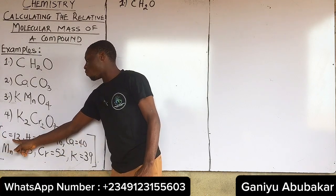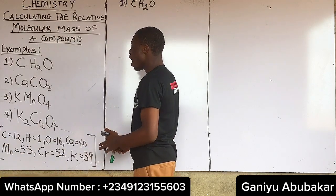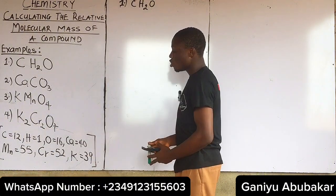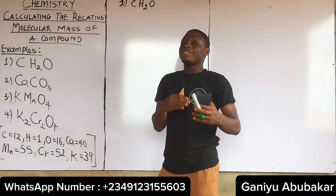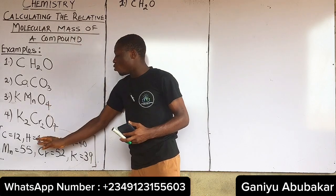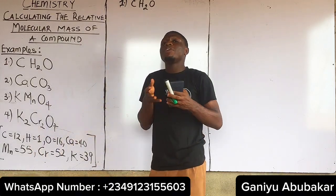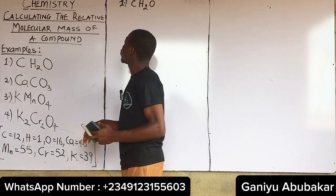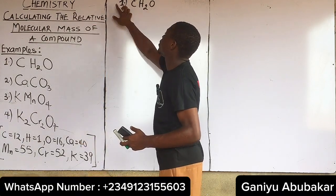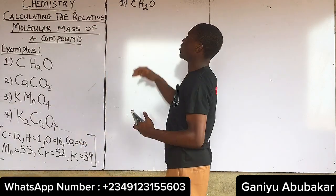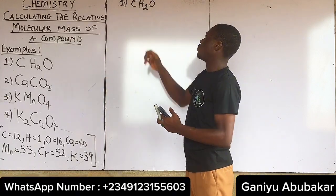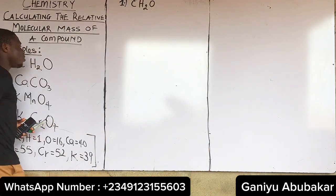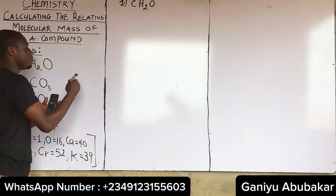So the atomic masses are: Carbon (C) = 12, Hydrogen (H) = 1, Oxygen (O) = 16, and so on. When told to calculate the molecular mass, you may or may not be given these values. In this case we are given them. Let's start with number one: CH₂O. Carbon has an atomic mass of 12, so I have 12.